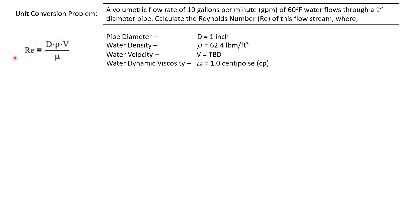The Reynolds number is a simple enough equation. It's the diameter times the density of the liquid times the velocity of the liquid divided by the dynamic viscosity. In this problem we're given the pipe diameter is one inch.